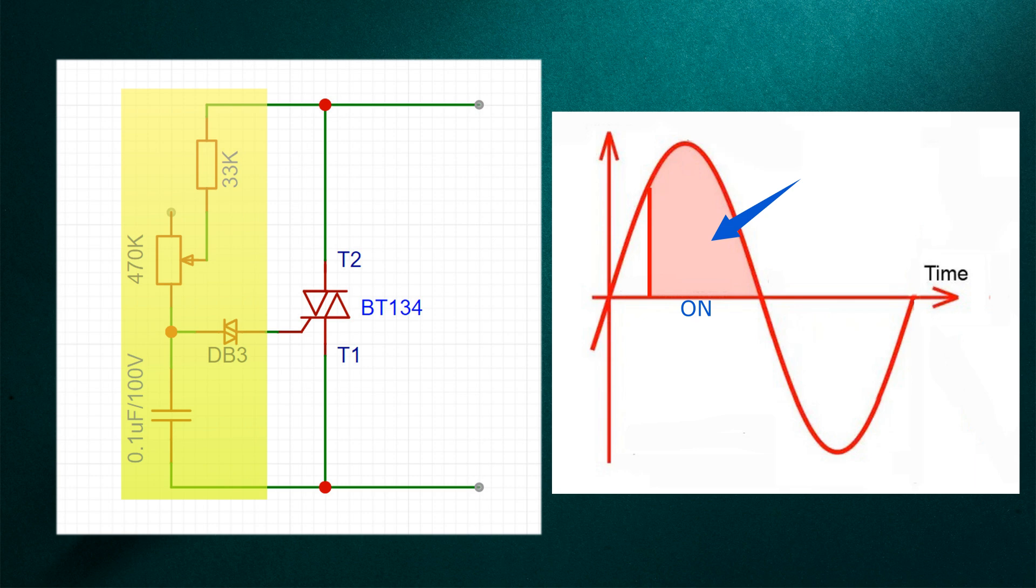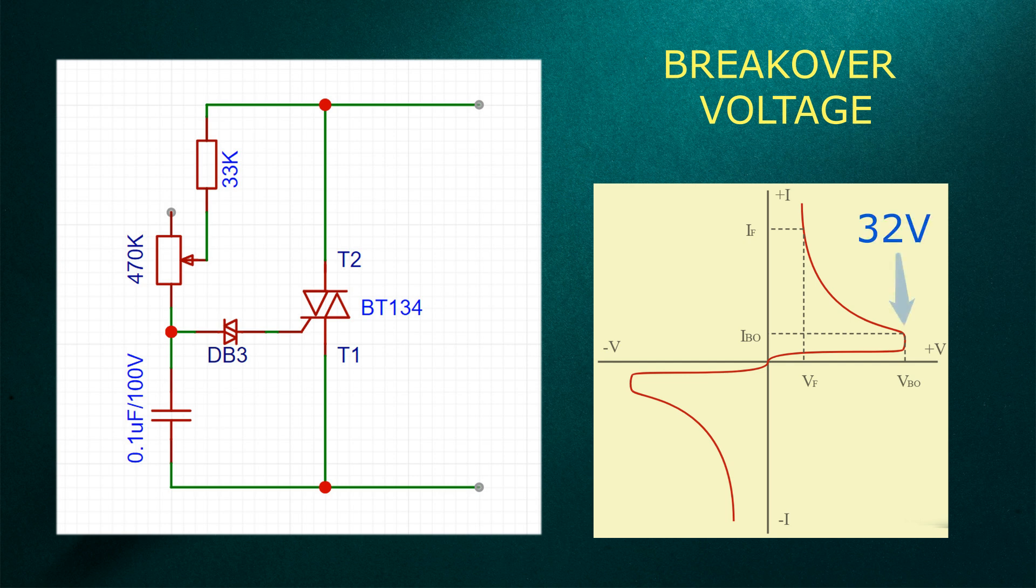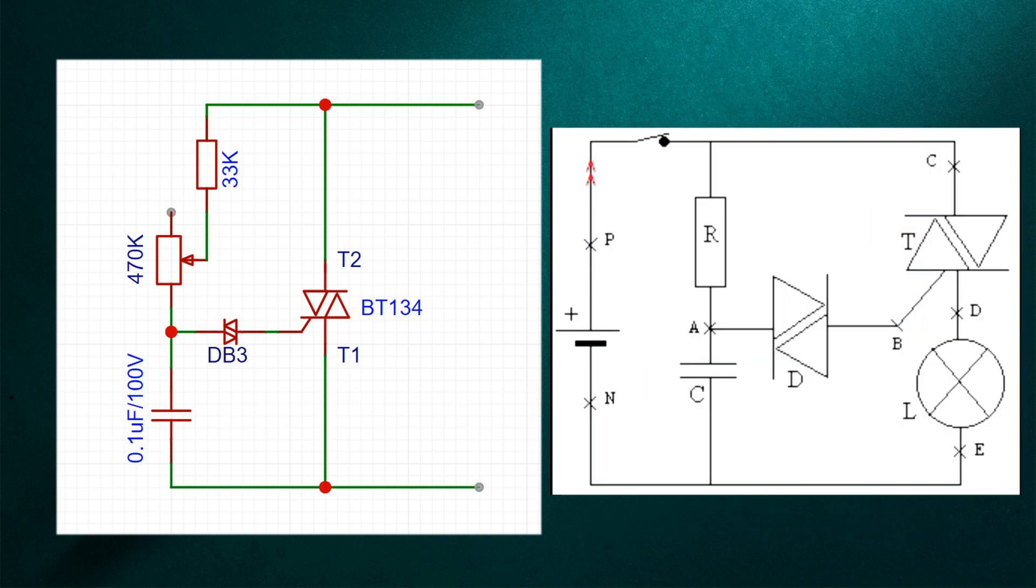The RC network and diac in the circuit help the triac to perform this operation. The diac only starts conducting when it reaches a certain voltage level called breakover voltage, which is 32V for the DB3 diac. The capacitor starts charging through the resistor network. When the capacitor voltage crosses 32V, the diac sends a gate pulse to the triac to switch it on.